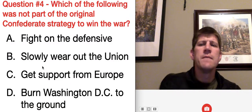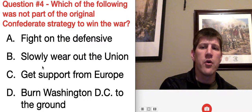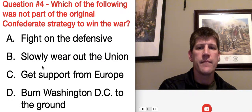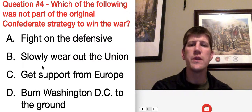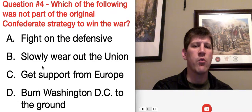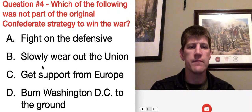Question number four: which of the following was not part of the original Confederate strategy to win the war? A, fight on the defensive; B, slowly wear out the Union; C, get support from Europe; or D, burn Washington, D.C. to the ground.